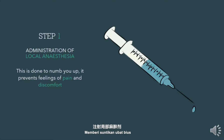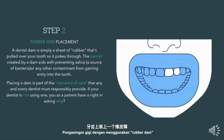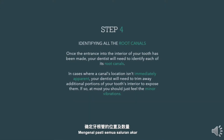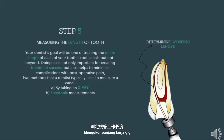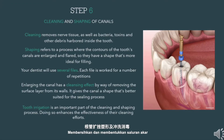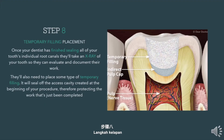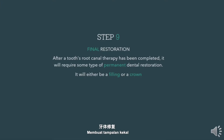The steps in RCT are as follows: Step 1 — administration of local anesthesia. Step 2 — rubber dam placement. Step 3 — creating the access cavity. Step 4 — identifying all the root canals. Step 5 — measuring the length of the tooth. Step 6 — cleaning and shaping of the canals. Step 7 — sealing the tooth. Step 8 — temporary filling placement. Step 9 — final restoration.